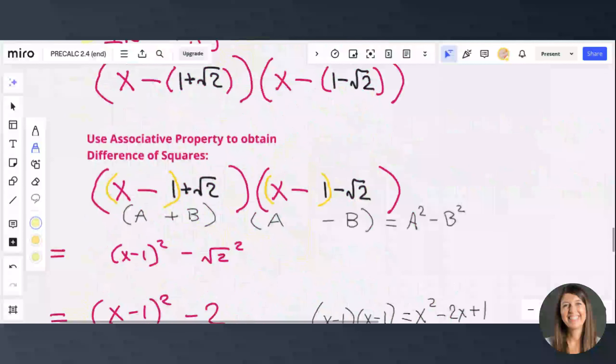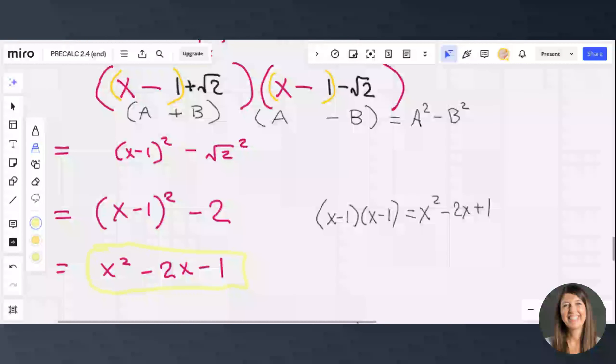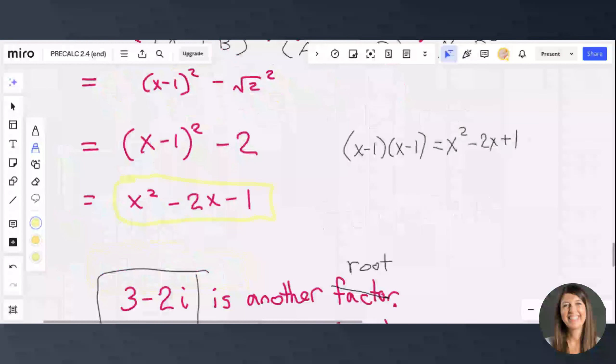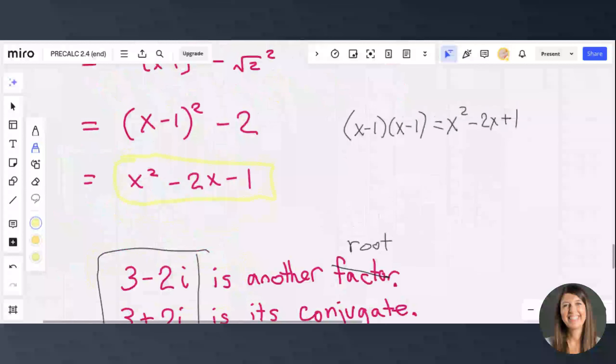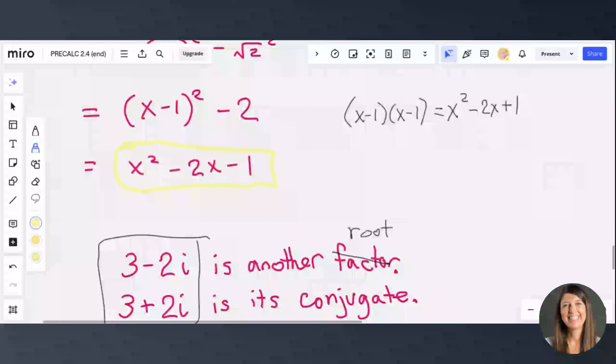Then we did x squared minus 2x minus 1 that I have circled in yellow right here. That's our third one.